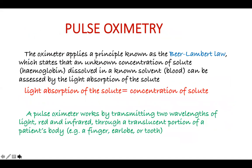The pulse oximeter applies a principle known as the Beer-Lambert law, which states that an unknown concentration of a solute — that is, hemoglobin — dissolved in a non-absorbing solvent can be assessed by the light absorption of the solute. This basically means that light absorption of the solute can be used to assess its concentration. A pulse oximeter works by transmitting two wavelengths of light — red light and infrared light — through a translucent portion of the patient's body, which can be the finger, ear lobe, or the tooth.